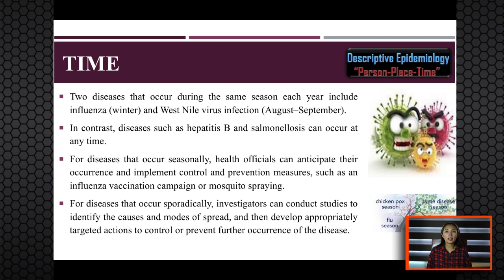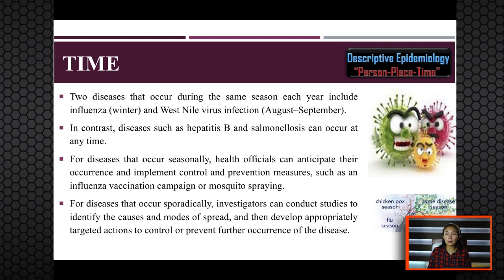Now let's look into the three scopes of descriptive epidemiology, beginning with time. There are diseases that change over time — sometimes they are predictable, others are unpredictable. For diseases that occur seasonally, health officials can anticipate their occurrence and implement control and prevention measures such as influenza vaccines or mosquito spraying campaigns to avoid dengue. For diseases that occur sporadically, investigators can conduct studies to identify causes and modes of spread, then develop appropriately targeted actions to control or prevent further occurrence.